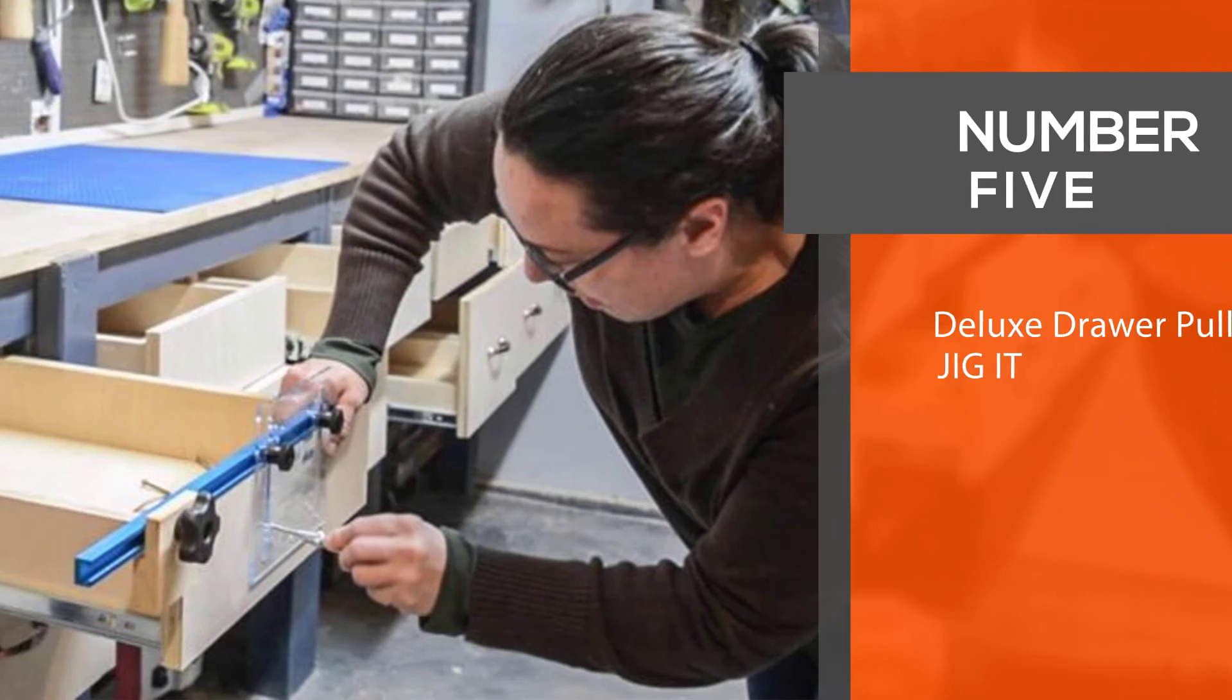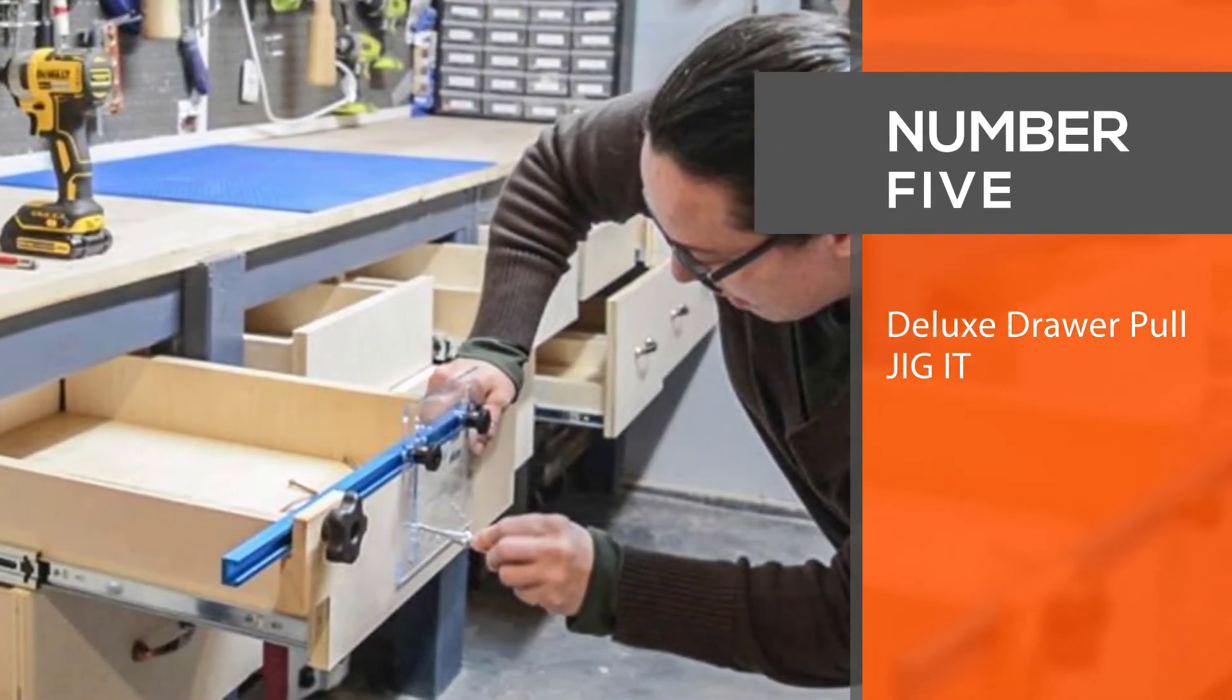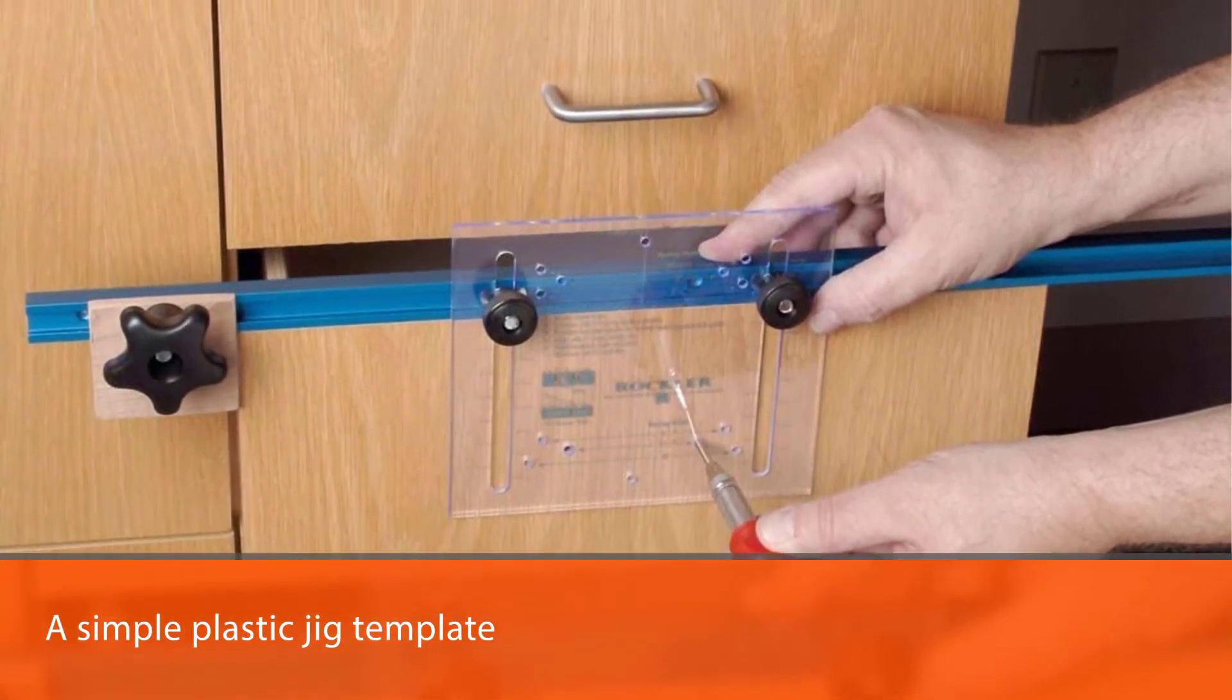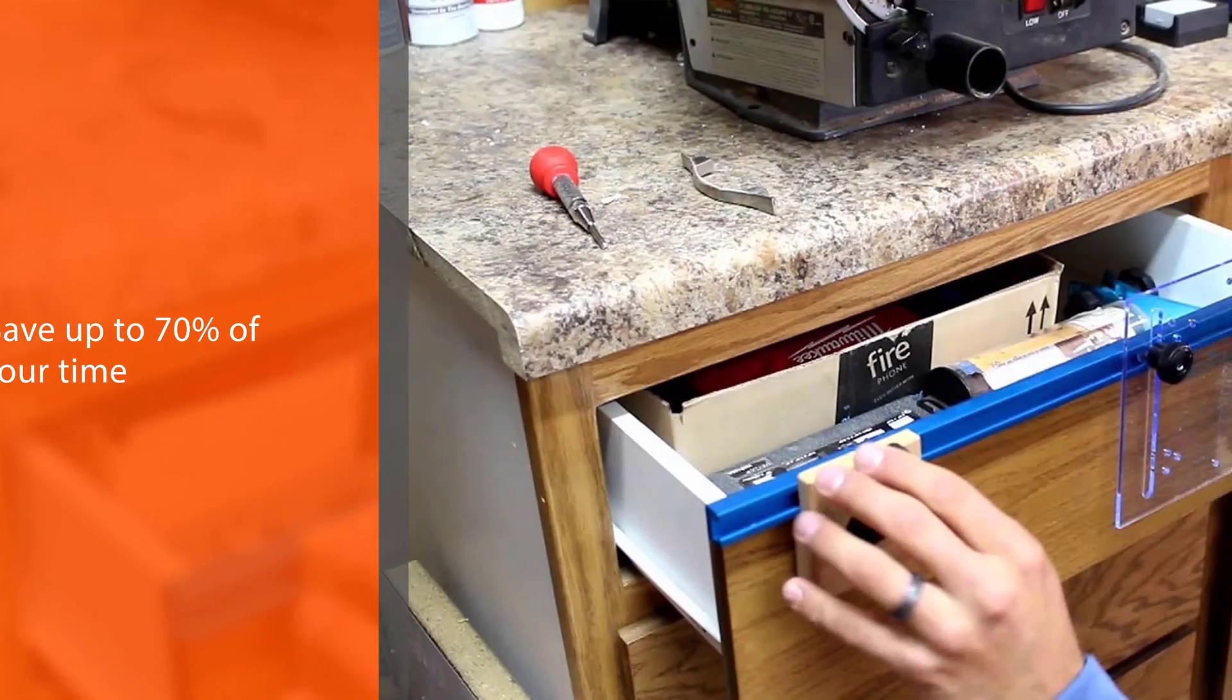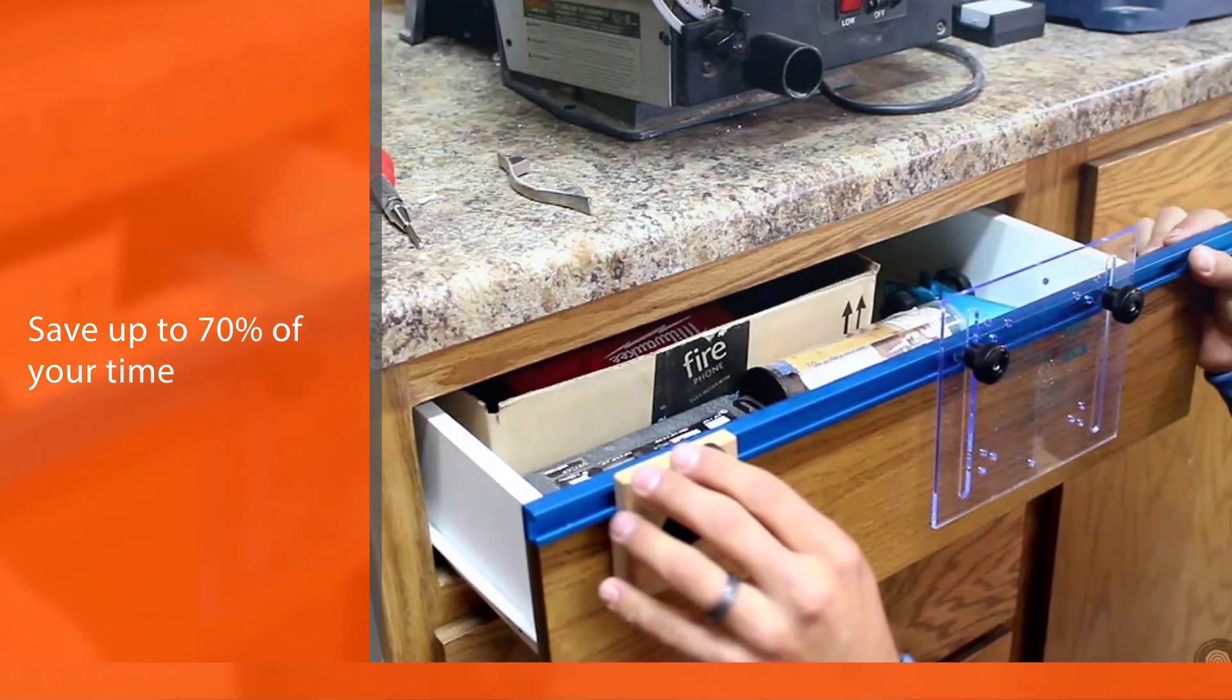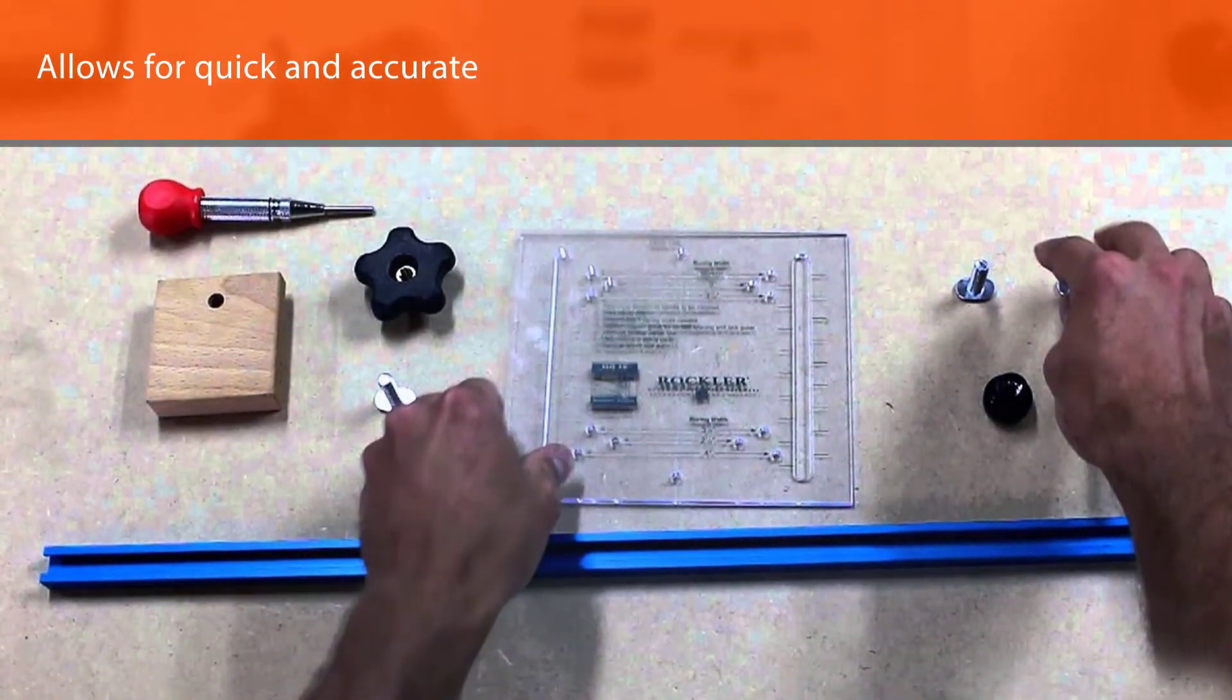Number five: Deluxe Drawer Pull Jig. It's a simple plastic jig template that allows you to mark the screw holes for installing kitchen cabinet hardware easily. You could save up to 70 percent of your time with this one. This jig allows for quick and accurate installation of drawer pulls, but you would have to modify it if you want to install a five-inch center spacing pull.